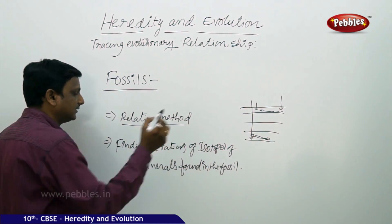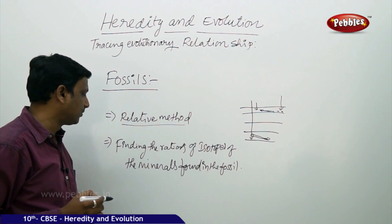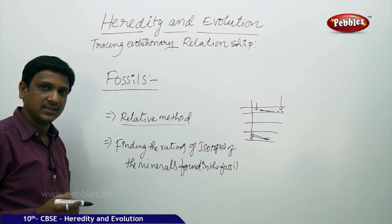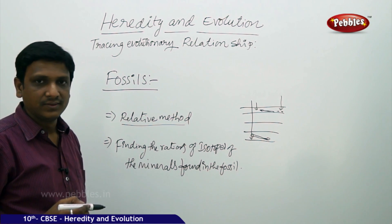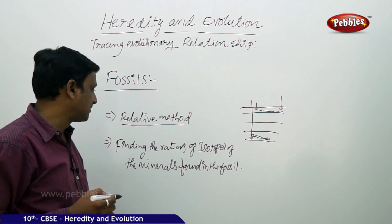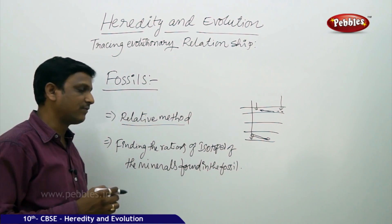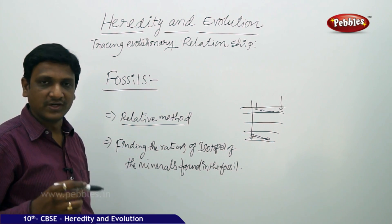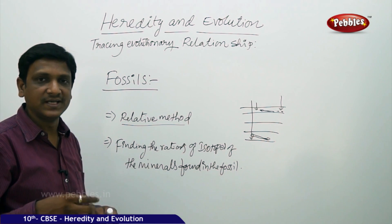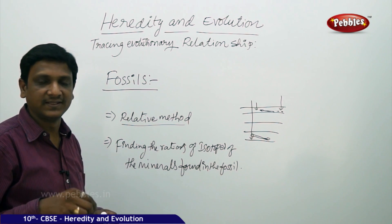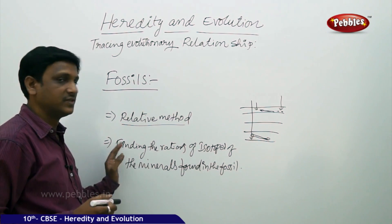The other method is finding the ratios of isotopes of the minerals found in the fossil. This is called the carbon dating technique. They take a sample from the fossil and find the ratios of the isotopes of the minerals in it. By that, they can estimate the age of the fossil.